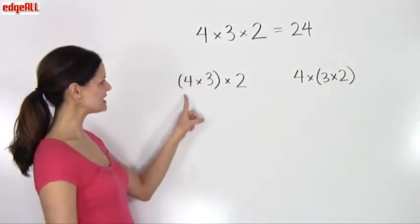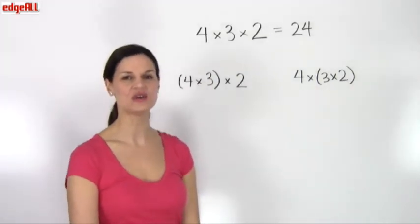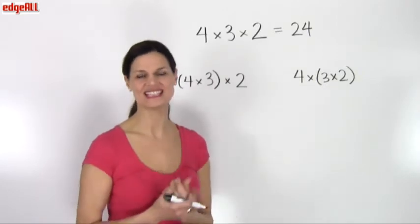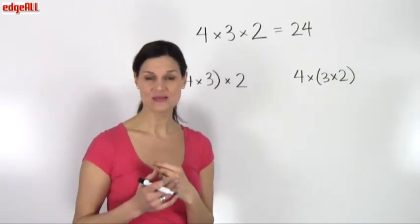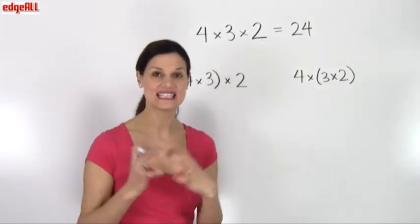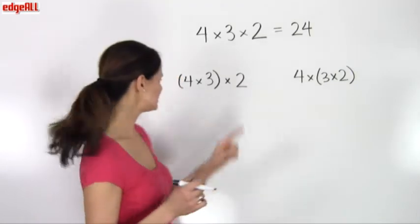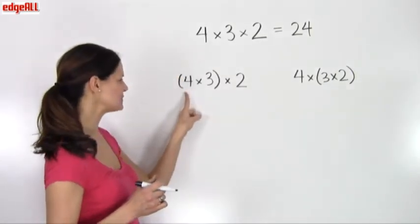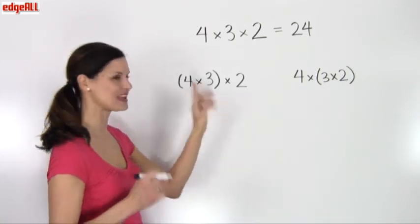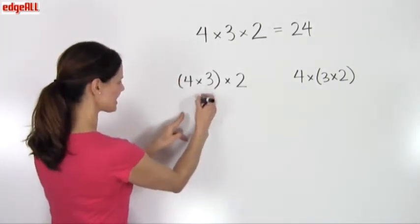So when I see this same problem here, 4 times 3 times 2, with parentheses in it, that tells me that I need to do the operation that's inside of parentheses first. So in this case, I specifically need to multiply 4 times 3 first.